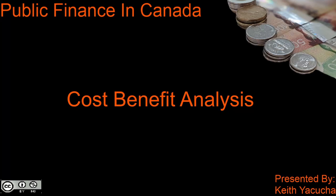Welcome back to Public Finance in Canada. I'm Keith Kucha, and in this video we're going to be taking a look at a cost-benefit analysis. In the past video, we took a look at welfare economics. We saw that with the fundamental theorem of welfare economics, there was room for a benevolent social planner. This social planner could change the predistributions in order to achieve socially desirable outcomes — that is, to increase social notions of fairness, or how a society necessarily wanted distributions to take place.